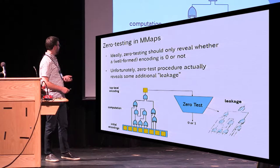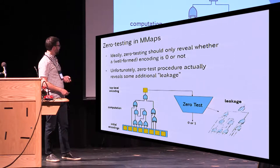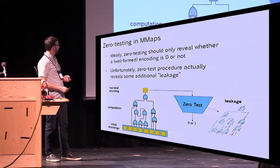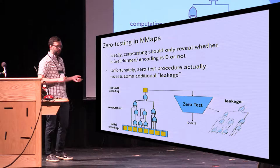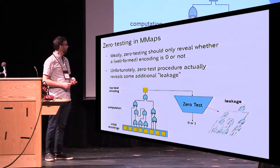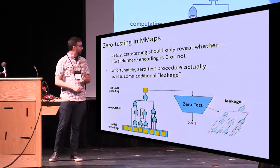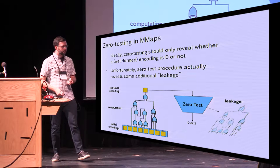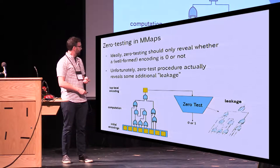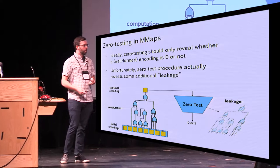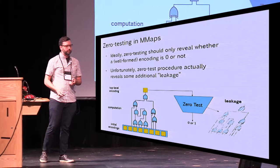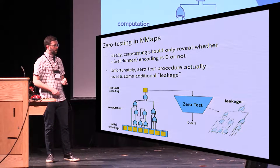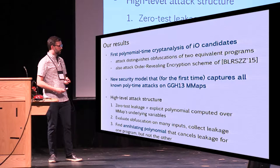You can visualize this as follows: you have some initial set of encodings, you do some homomorphic computation on them, and you get a top-level encoding — where top-level and well-formed mean the same thing. You might then feed that through the zero test, and you will get out a bit that says zero or one. But you also get some leakage.